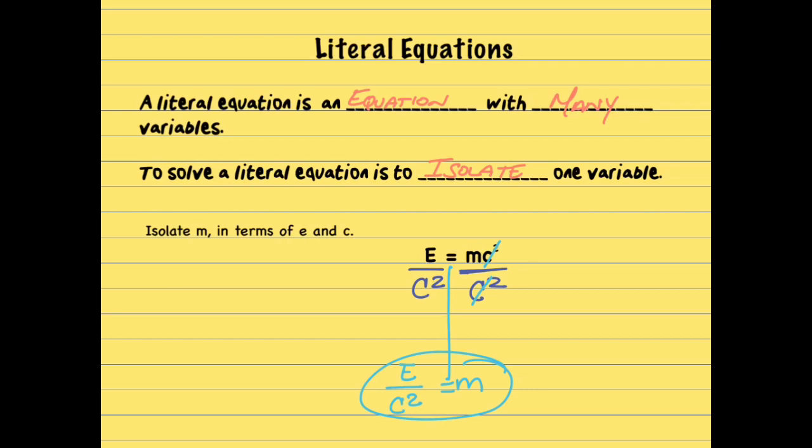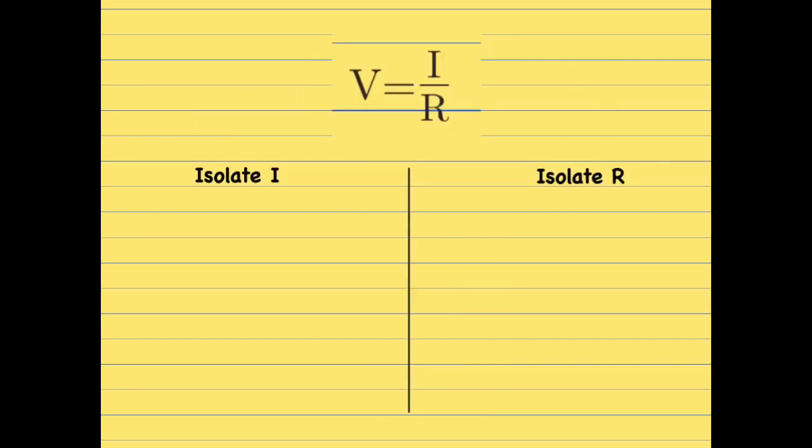Okay, we're going to look at another example. Here we have this equation. V equals I over R. Okay? So I wanted this one a little bit different. First, we're going to isolate the I. And in the same equation, we're going to isolate the R.